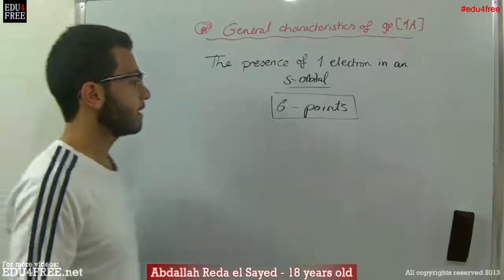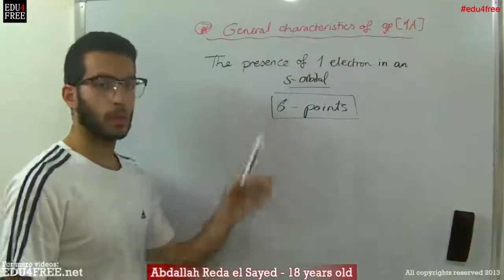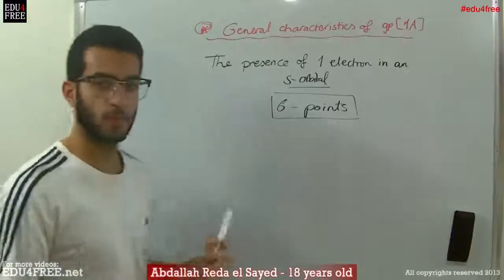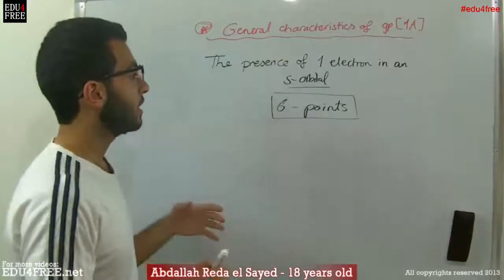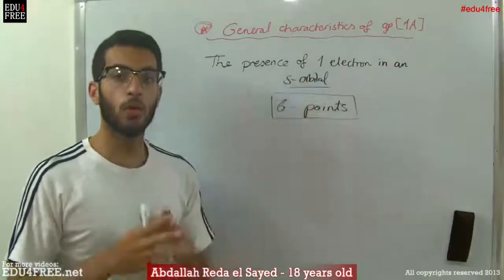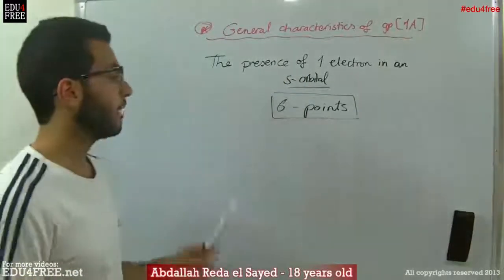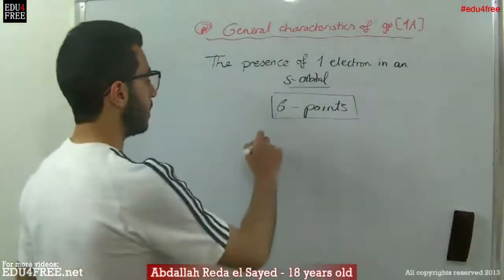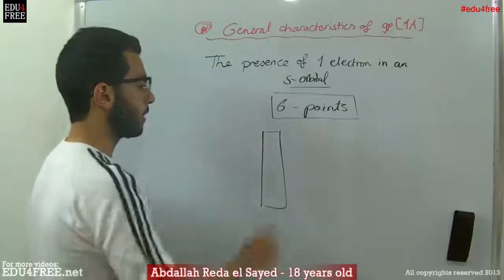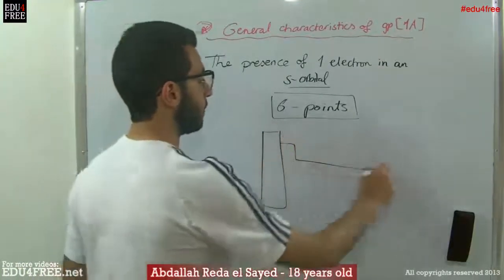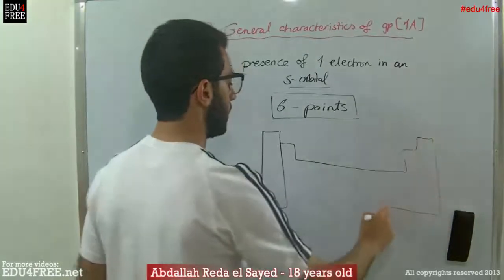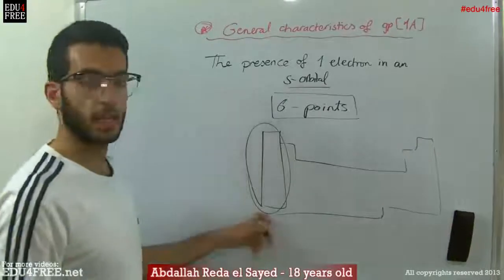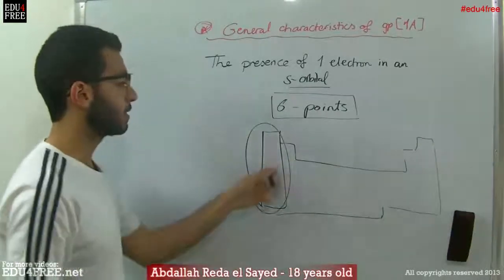The first point: the S orbital is the first orbital in the arrangement of the periodic table, and because it carries just one electron, all of these elements are found at the beginning of periods — on the very left part of the periodic table, at the start of all periods.